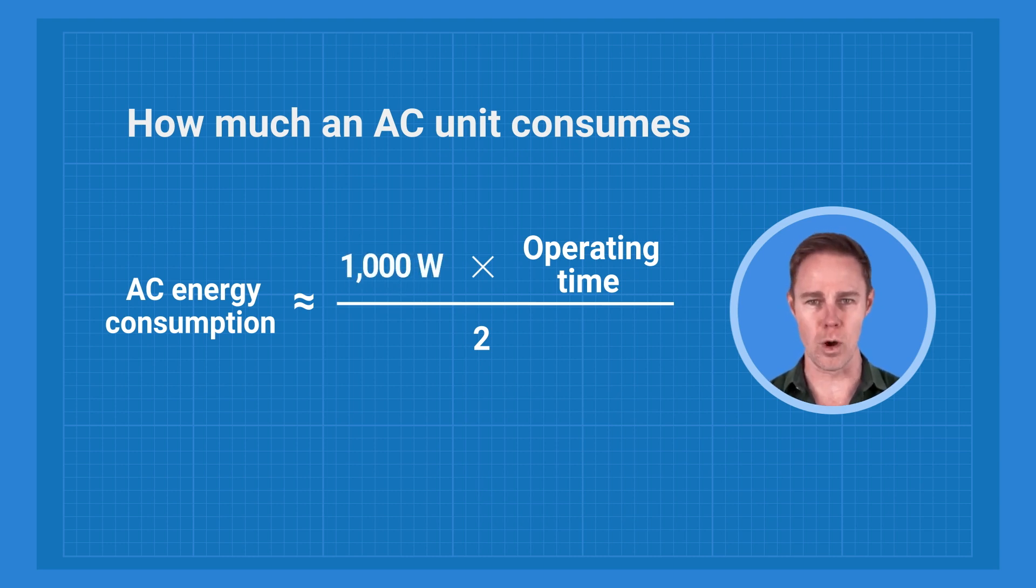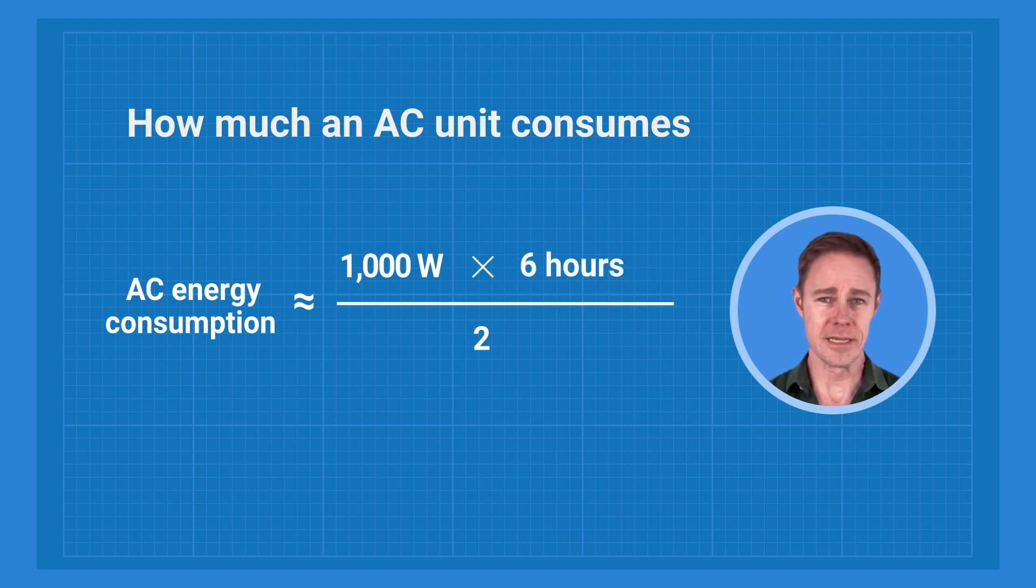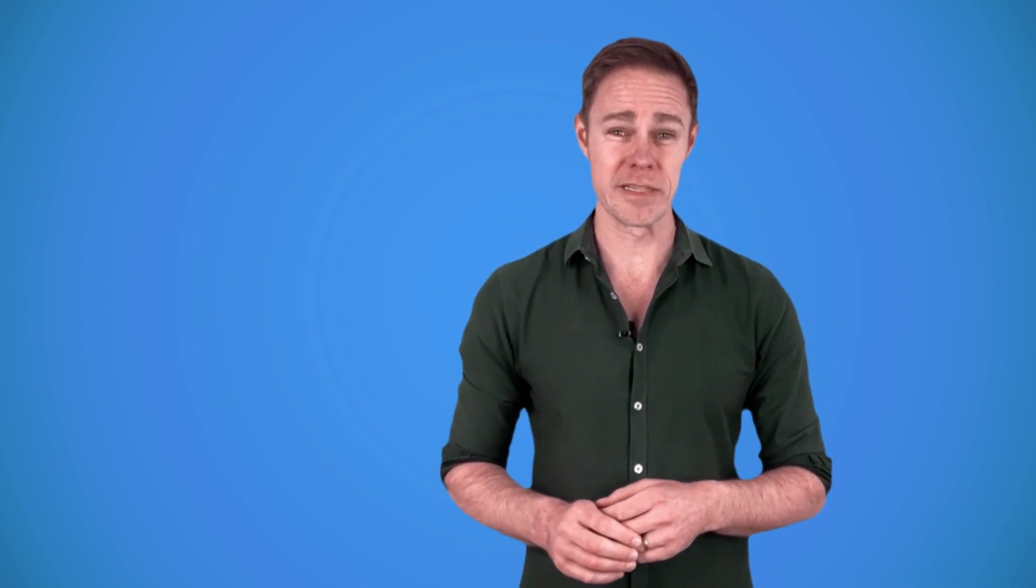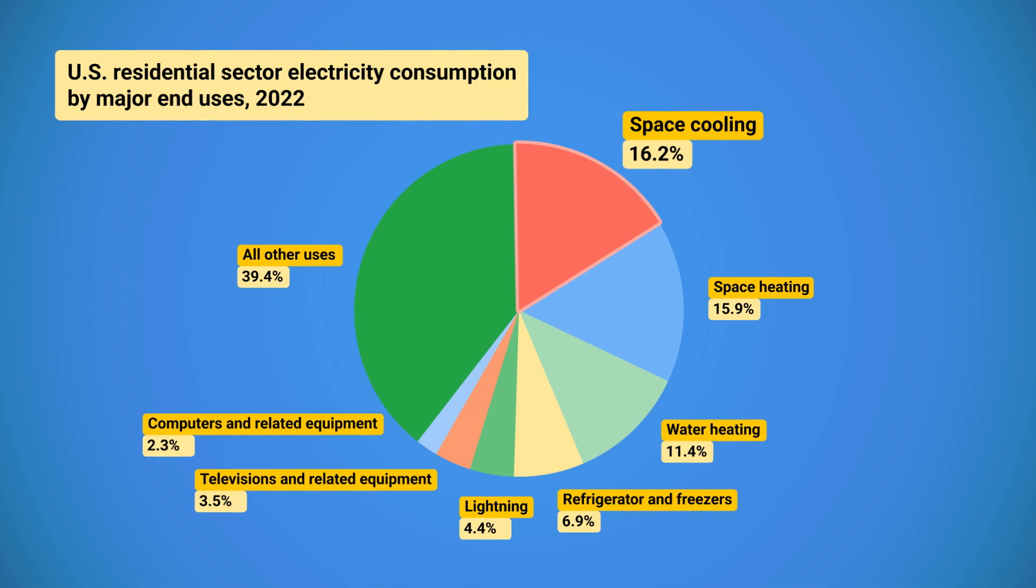So let's say we have an AC unit that's rated for 1000 watts, not a big one, and we turn it on every day for six hours. Then it would consume approximately 3 kilowatt hours of electricity every day. On average, the American household uses about 30 kilowatt hours per day. This small AC unit makes 10% of it, and statistics show that cooling the air indeed stands for about 16% of your electric bill.